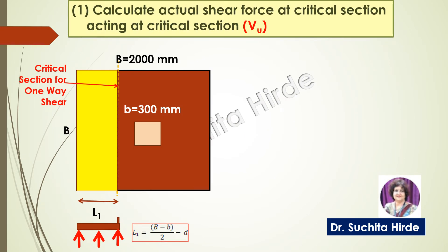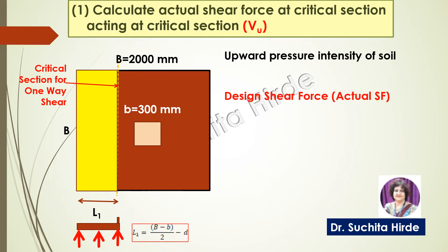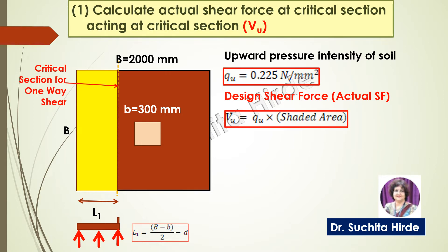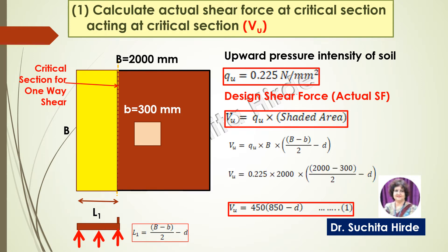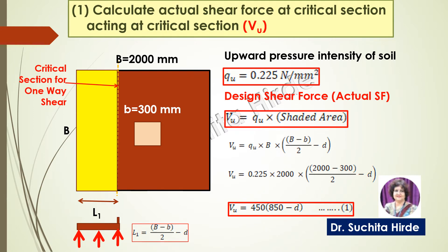To check the footing for shear, we first calculate the shear force at the critical section. For one-way shear in a footing, the critical section is at a distance d from the face of the column. The design shear force equals pressure intensity multiplied by the shaded area. Using the formula derived in the previous video, substituting the value of effective depth, we get the actual shear force at the critical section.